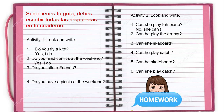Si no tienes tu guía, recuerda que debes escribir todas las respuestas en tu cuaderno como aparece en el ejemplo — activity one: the question and the answer; activity two: question and the answers. Recuerda que debes escribir la pregunta y las respuestas en tu cuaderno. Así debería quedar tu tarea en el cuaderno.